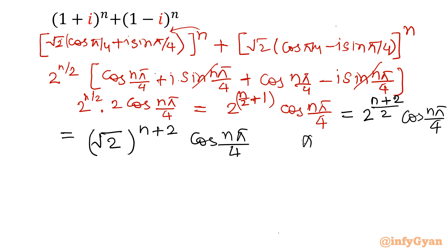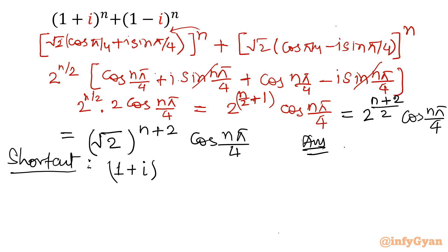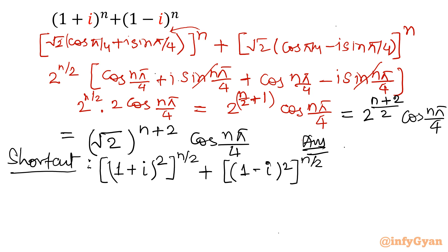That is our correct and final answer. Now see the shortcut method. I will write (1 + i)^n as [(1 + i)²]^(n/2). Now (1 + i)² using the formula a² + 2ab + b² equals 1 + 2i + i² equals 1 + 2i − 1 equals 2i.